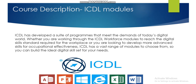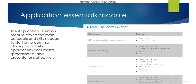Now, I'm going to introduce the modules we are going to cover within this course. The first module is the Application Essentials module. Within this module, we will cover the main concepts and skills needed to start using common office productivity applications — documents, spreadsheets, and presentations effectively. We are going to cover three different topics: word processing, spreadsheet, and presentation, where we will cover certain skills.